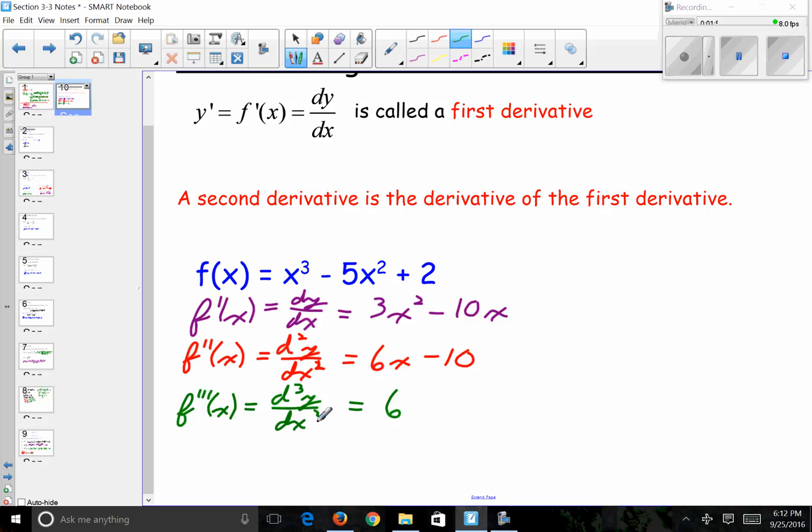And if I take the derivative of this, which would be zero, this is the fourth derivative. And in Leibniz notation it would be d to the fourth y dx to the fourth.